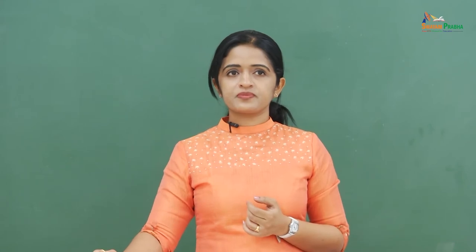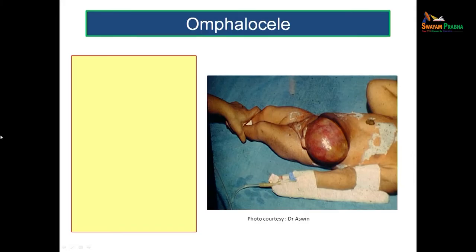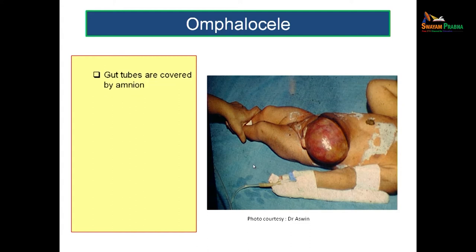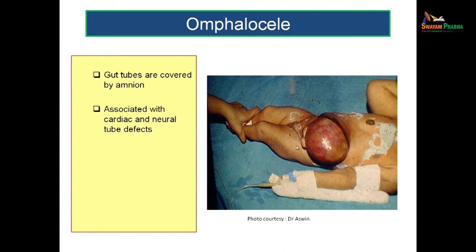In this session, we will be seeing about the development of gut tubes. Before moving on to the topic proper, let us see a clinical scenario. This baby is born with a huge mass at the umbilical region, and this condition is known as omphalocele. Omphalocele means you have the gut tubes lying outside the abdominal cavity, and this is covered by amnion. Usually, this condition is associated with cardiac and neural tube defects, and in this condition you will also get elevated alpha-fetoprotein levels.